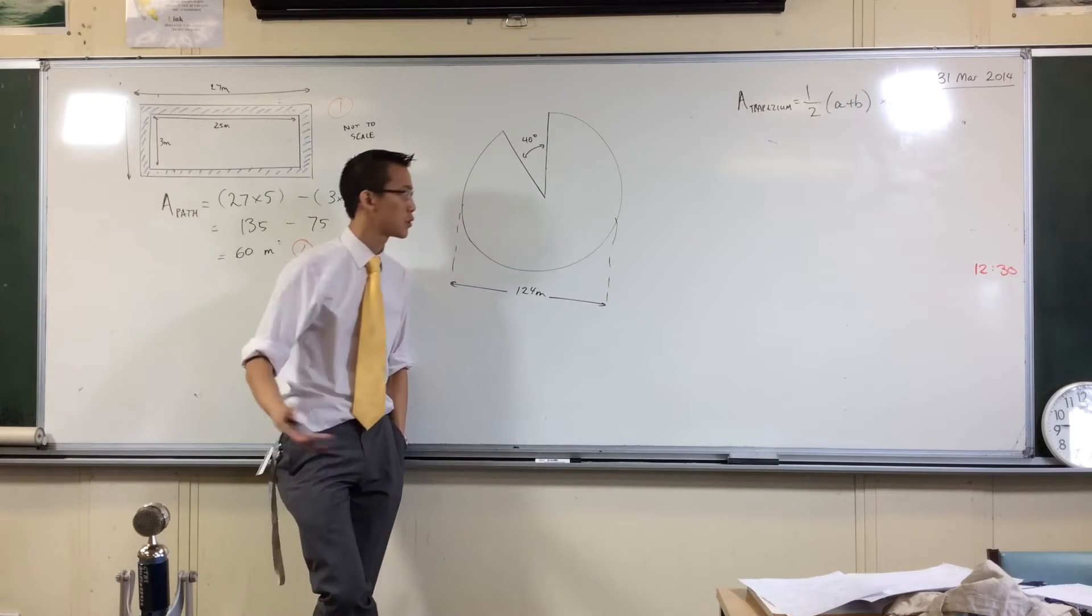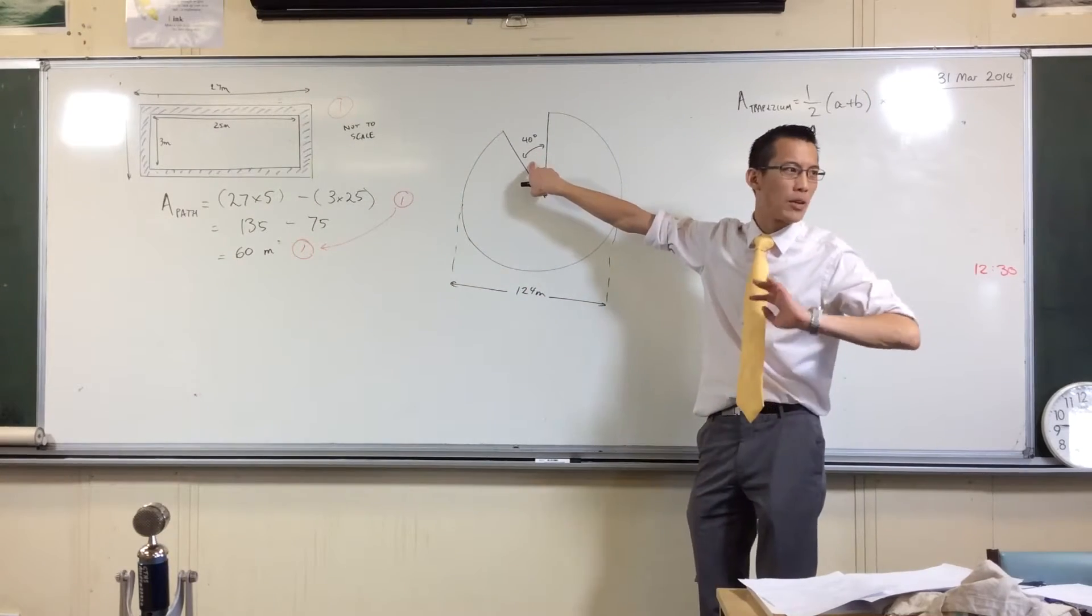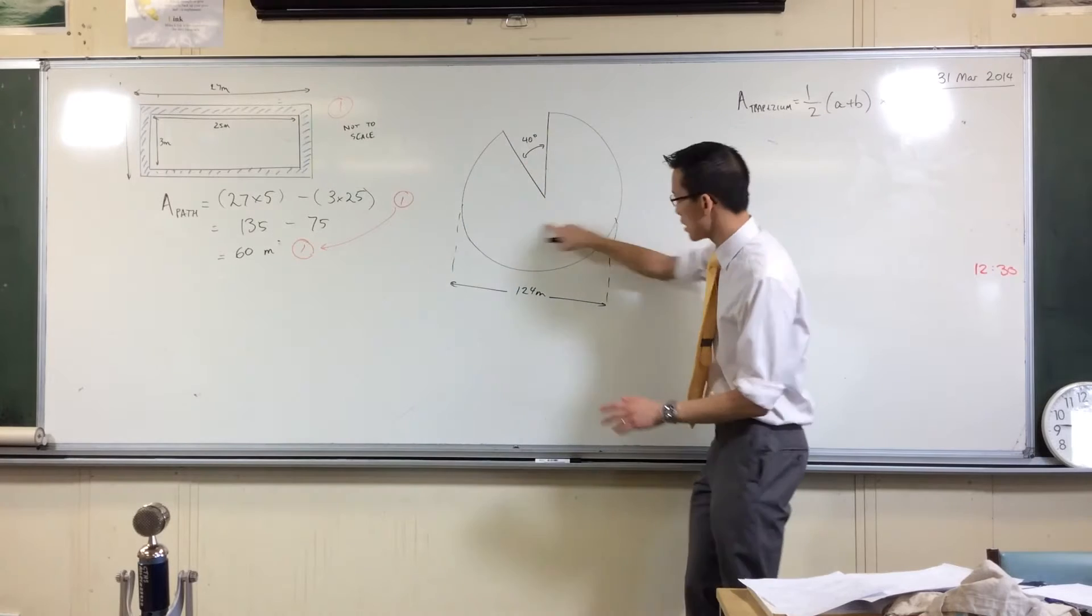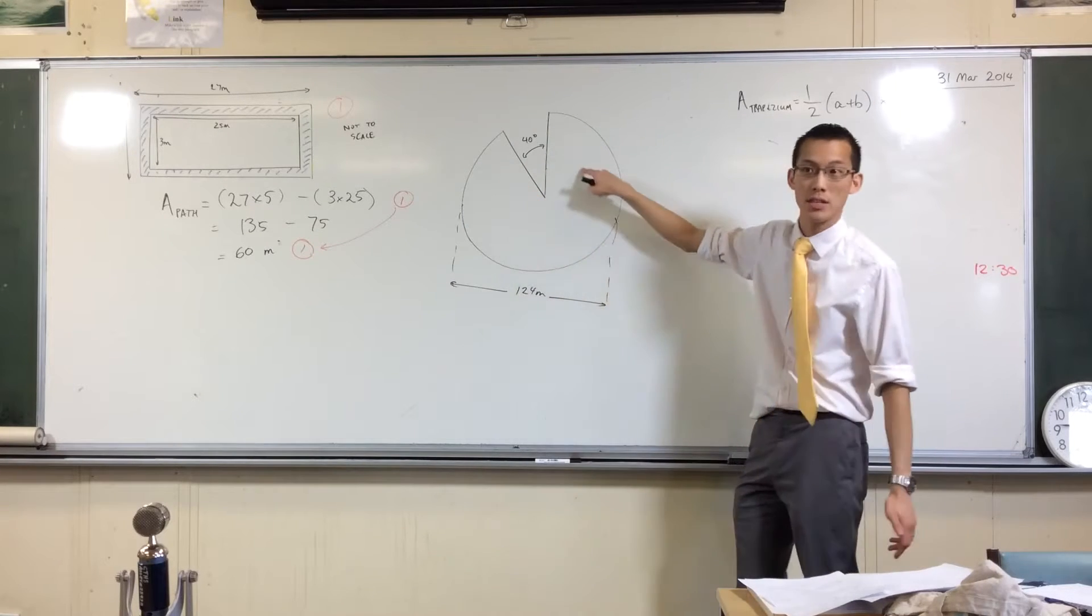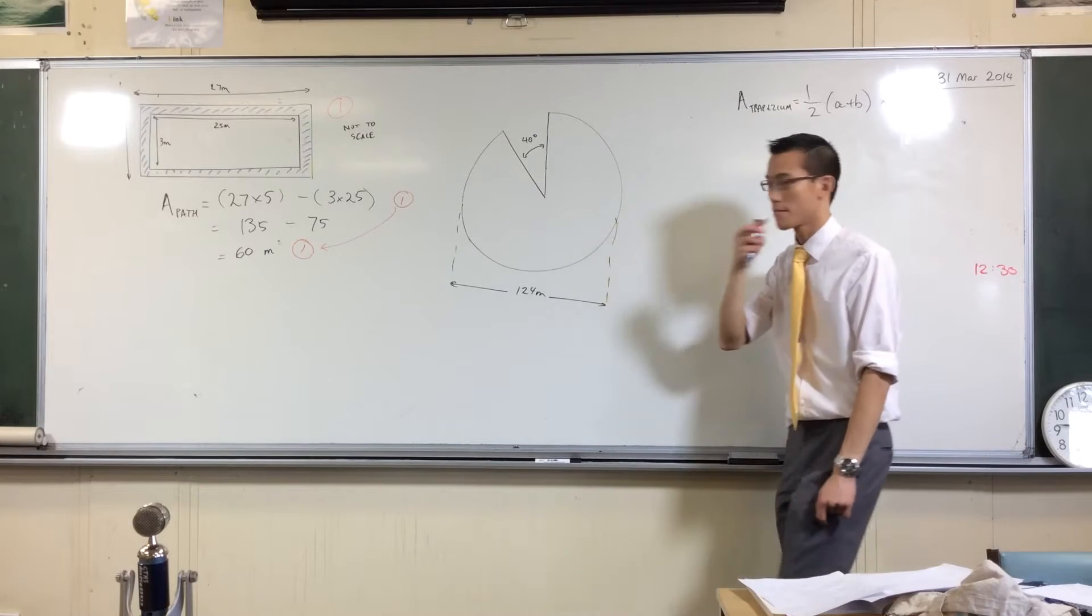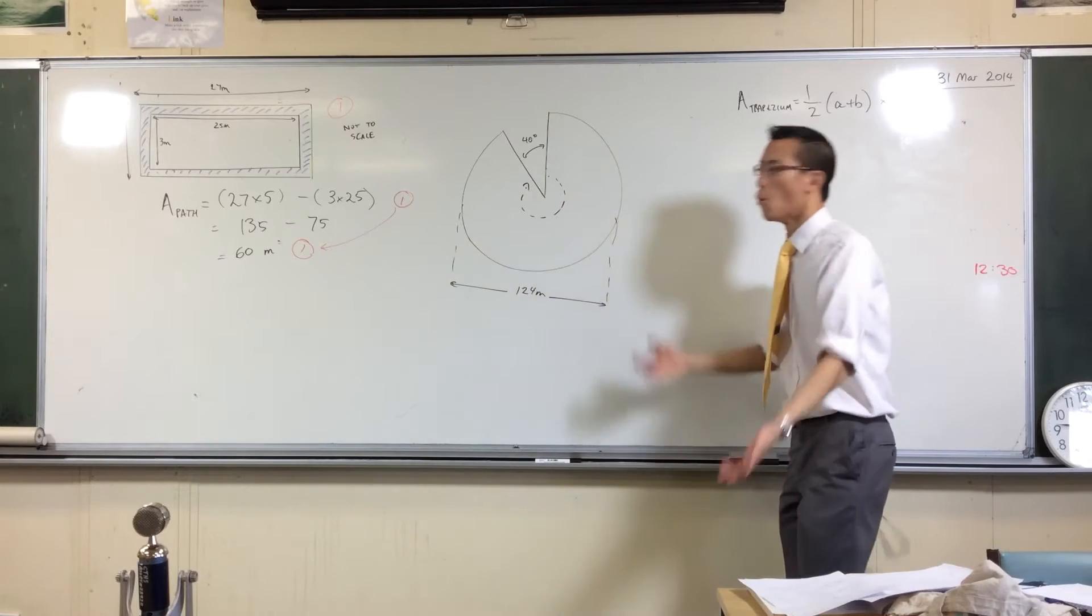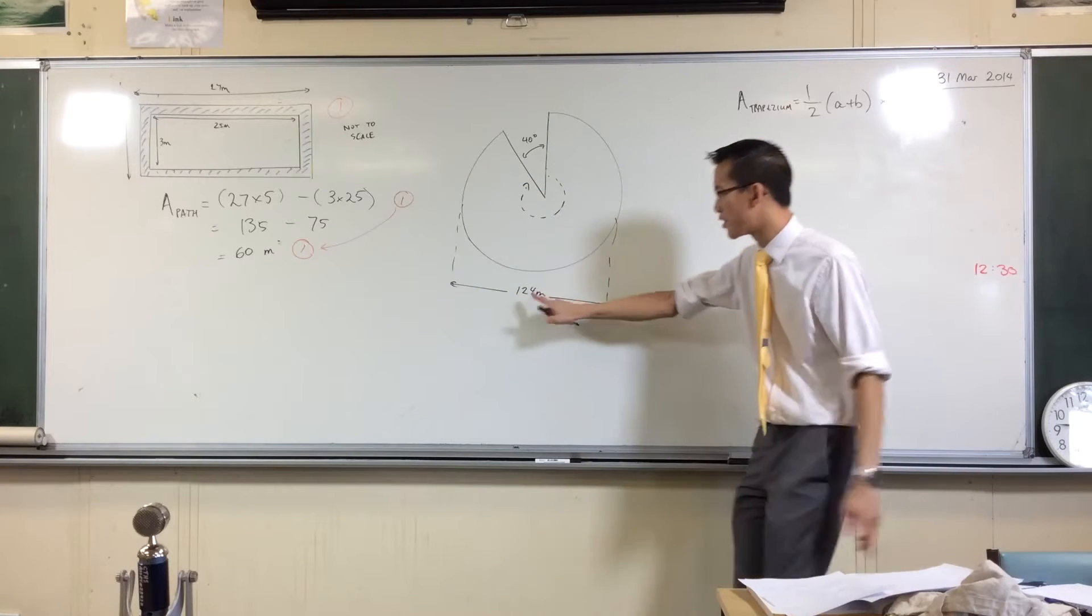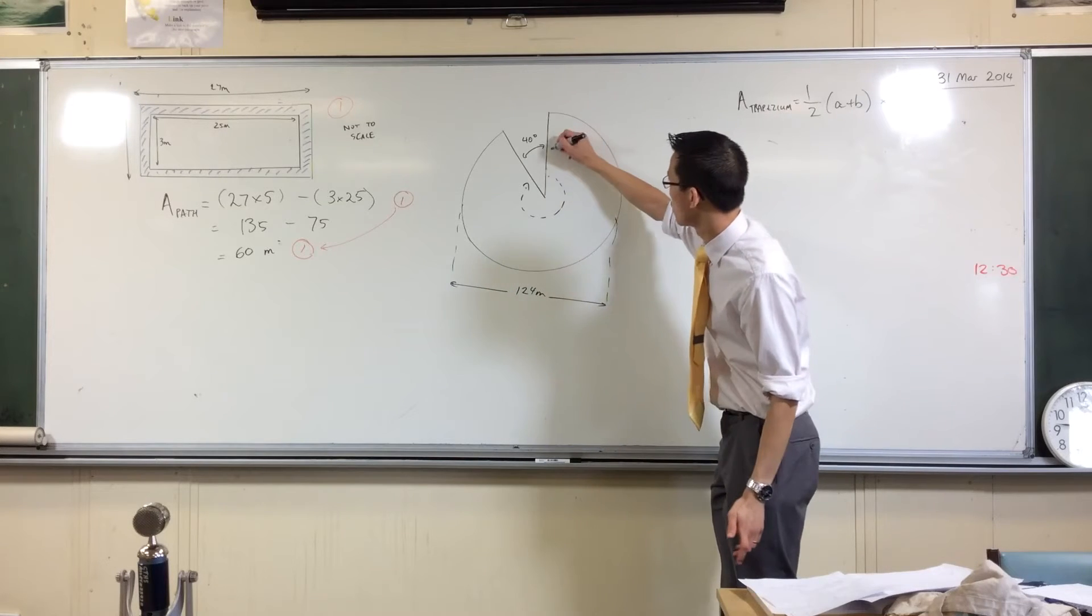A couple of things. First, this is 40 degrees but that's the part we don't want. We want this part, that's the part we actually want. So how do I work out the size of this angle? Actually why don't we find out the radius now. Half the diameter is, I think we said, 62 meters, so I'm going to put that there because that's the radius.